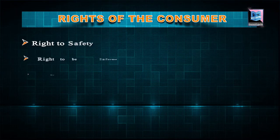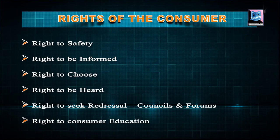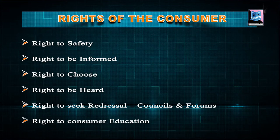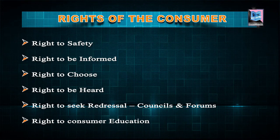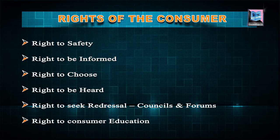Before we go to the defect in goods and deficiency in services, we need to know the rights provided under the Consumer Protection Act 1986. There are six rights: right to be informed, right to grievance redressal, right to consumer education, right to be heard, and related rights. All these rights are provided under the Act.